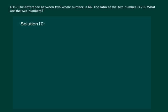Let us read the question. The difference between two whole numbers is 66. The ratio of the two numbers is 2 is to 5. What are the two numbers? Since the ratio of the two numbers is 2 is to 5, we may take one number to be 2x and the other to be 5x.